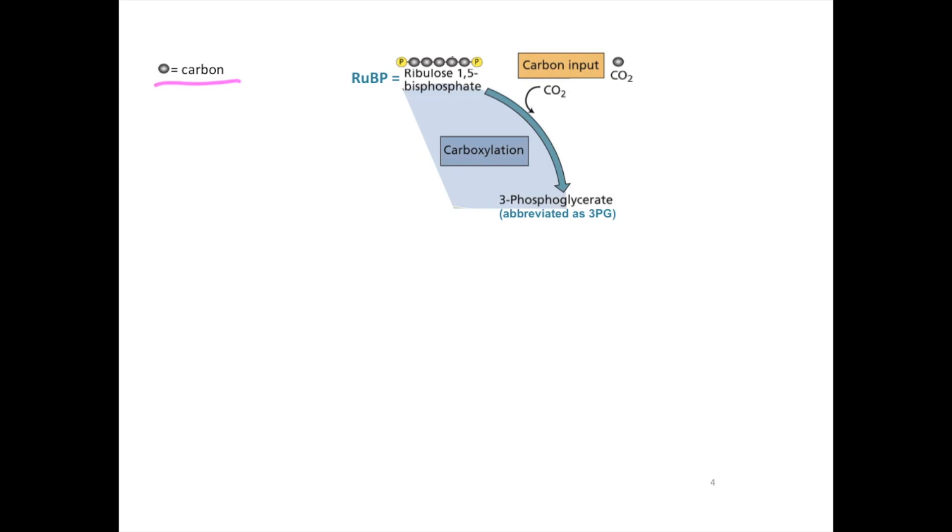Starting with phase one, carboxylation. I view it as the most important phase because several things are needed to start the Calvin cycle here. First, we need ribulose 1,5-bisphosphate. It is called RuBP for short. If you want to know why it has this unusual name, it's actually quite literal. We have five carbons here, and the 1,5 simply refers to the location of different phosphate groups.